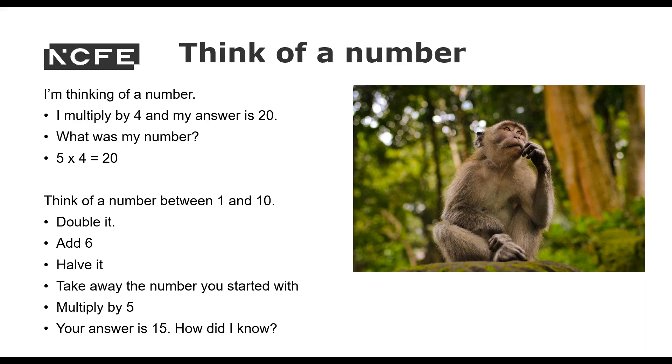How did I know? So this is something that you can ask your learners. Can they work out how I'm always going to know what their answer is because ultimately no matter what number you start with, by adding 6 after we've doubled and then halved and took away the number we started with, I'm always going to end up with an answer of 3 here and then because I've multiplied by 5 I'm going to get 15. But it's a nice one to get your learners thinking.